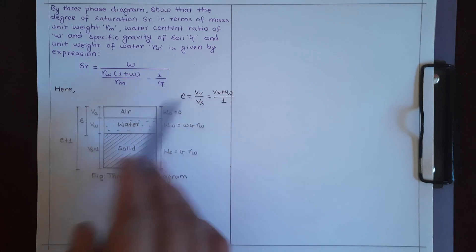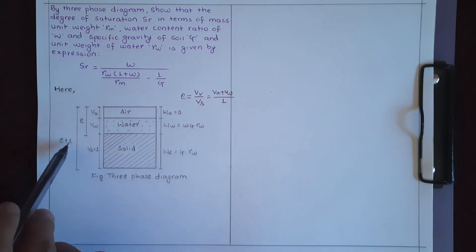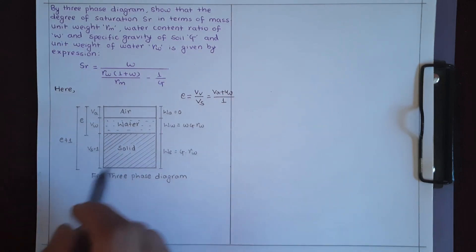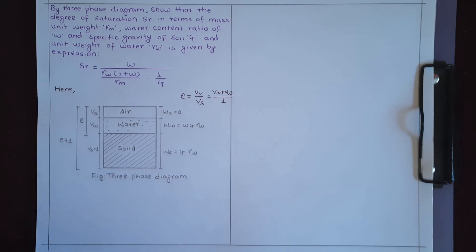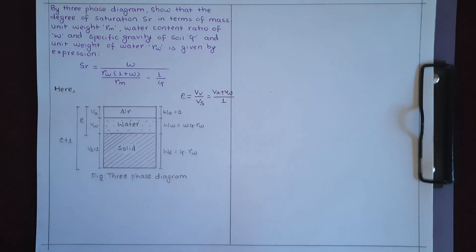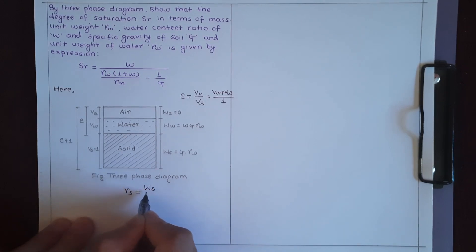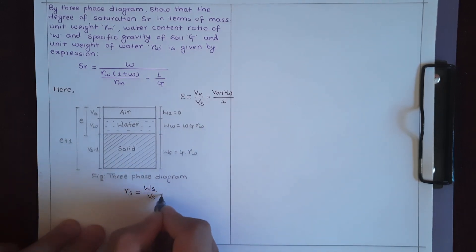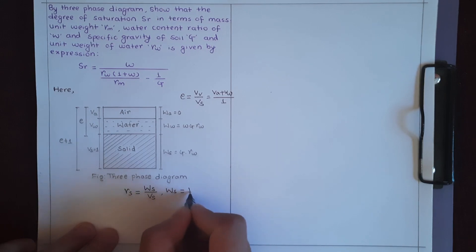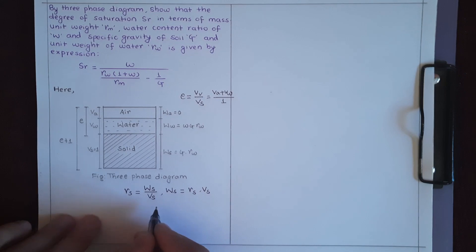The total volume is Ba plus Bw, i.e., equal to e plus 1, where solid is 1 and void is e. Weight of air is taken as zero. Gamma_s is the weight of solid by volume of solid. Weight of water is gamma_w times Bw, and weight of solid is G times gamma_w.